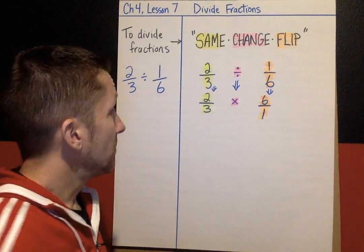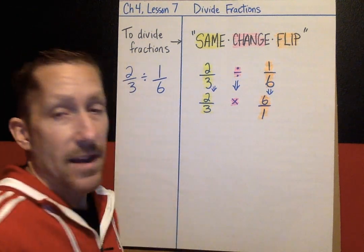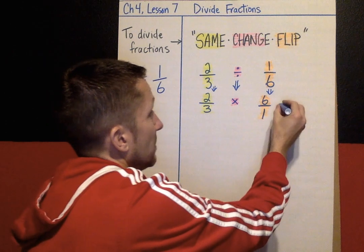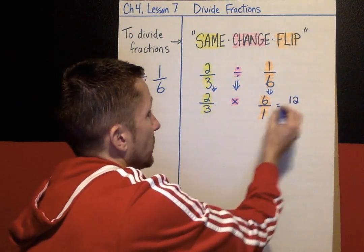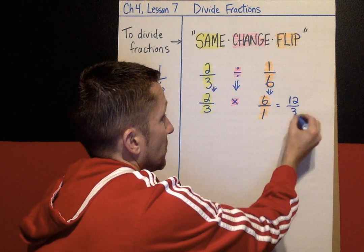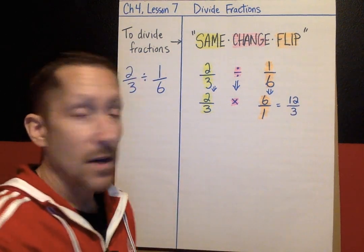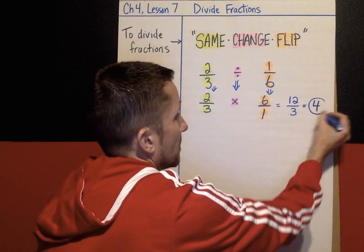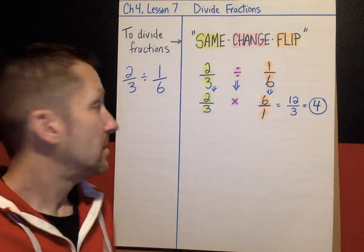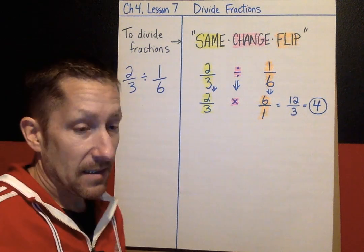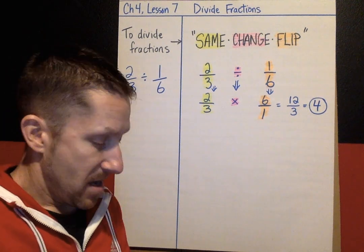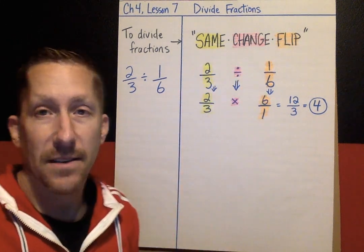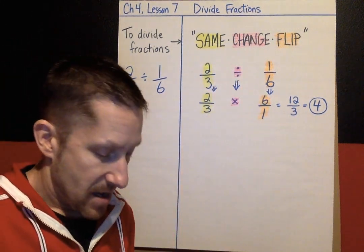After that, it's just multiplying, and we've been multiplying fractions for a few days now. We multiply numerators: 2 times 6 is 12, over 3 times 1, which is 3. We get an improper fraction, 12/3, which we can simplify. How many threes go into 12? Our answer is 4. So 2/3 divided by 1/6 equals 4. That is the strategy you're going to be practicing today: Same Change Flip.